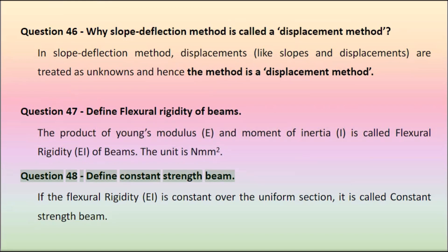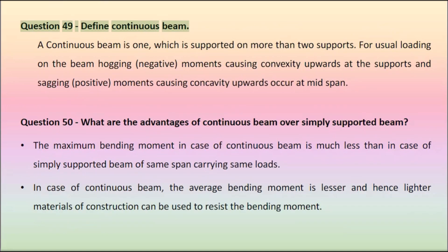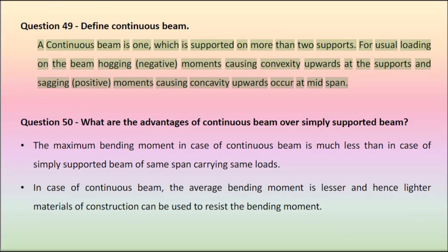Question 48: Define constant strength beam. If the flexural rigidity EI is constant over the uniform section, it is called a constant strength beam. Question 49: Define continuous beam. A continuous beam is one which is supported on more than two supports. For usual loading on the beam, hogging (negative) moments causing convexity upwards occur at the supports, and sagging (positive) moments causing concavity upwards occur at mid-span.